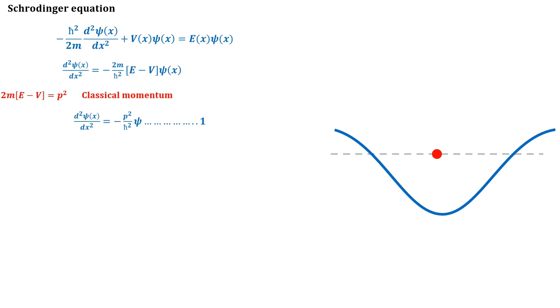Keep in mind that the classical momentum of the particle is h cross times the quantum momentum. If the energy of the particle is more than the potential barrier, then the momentum will be positive. This region is called classical region because the particle will remain confined in this region.